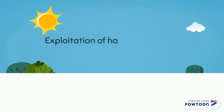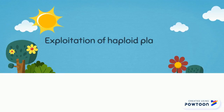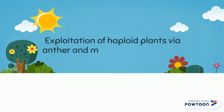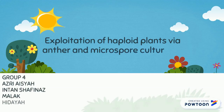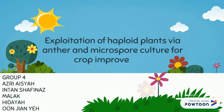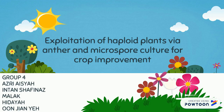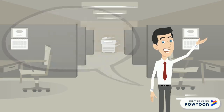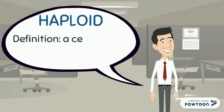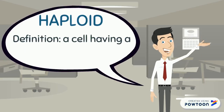Exploitation of haploid plants via anther and microspore culture for crop improvement. A haploid is a cell having a single set of unpaired chromosomes.